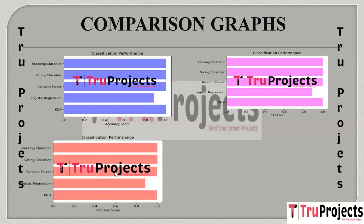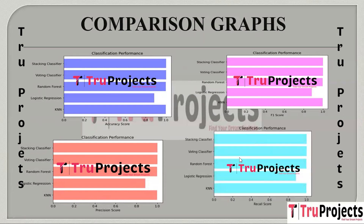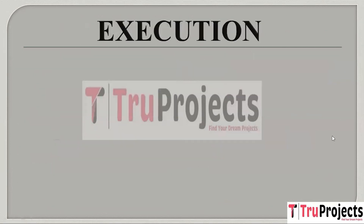This is the precision comparison graph, with precision scores on the x-axis and algorithm names on the y-axis. Precision measures the accuracy of positive predictions, indicating how many predicted positives were actually correct. The recall comparison graph shows recall scores on the x-axis, where recall measures the ability to identify all relevant instances. We can see all the models are performing well.